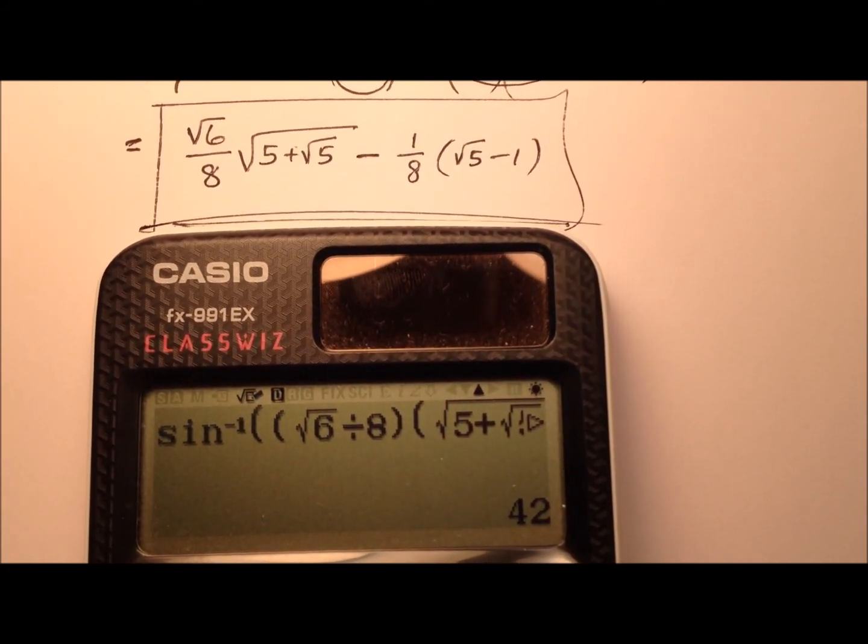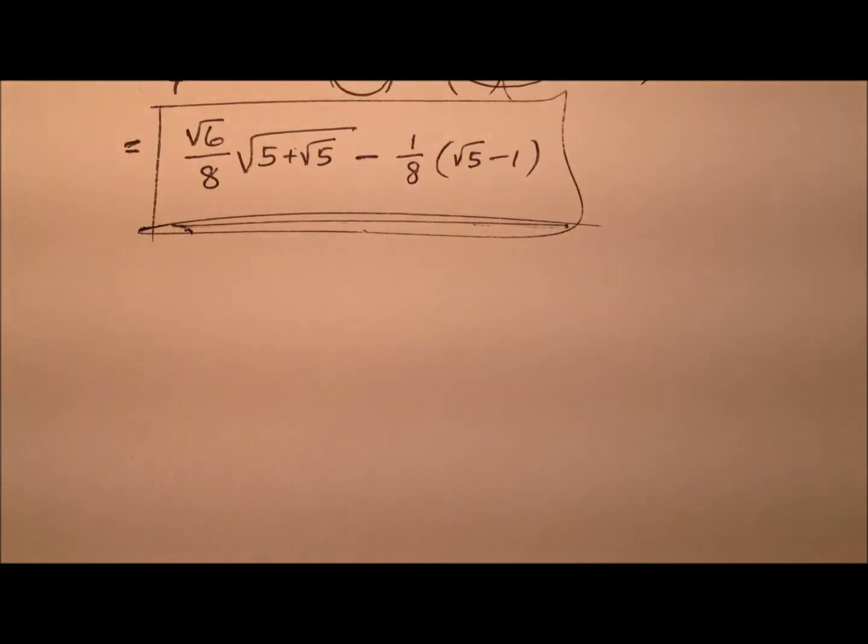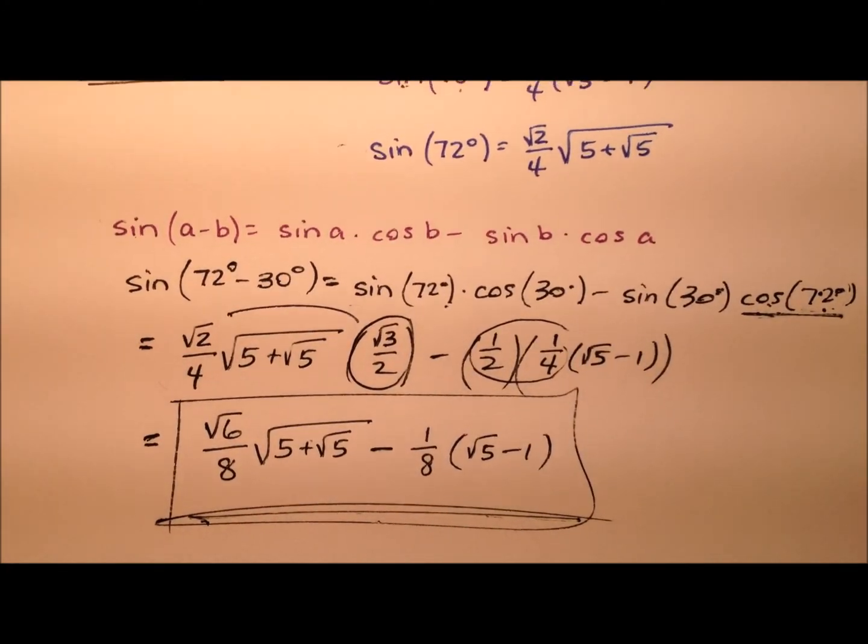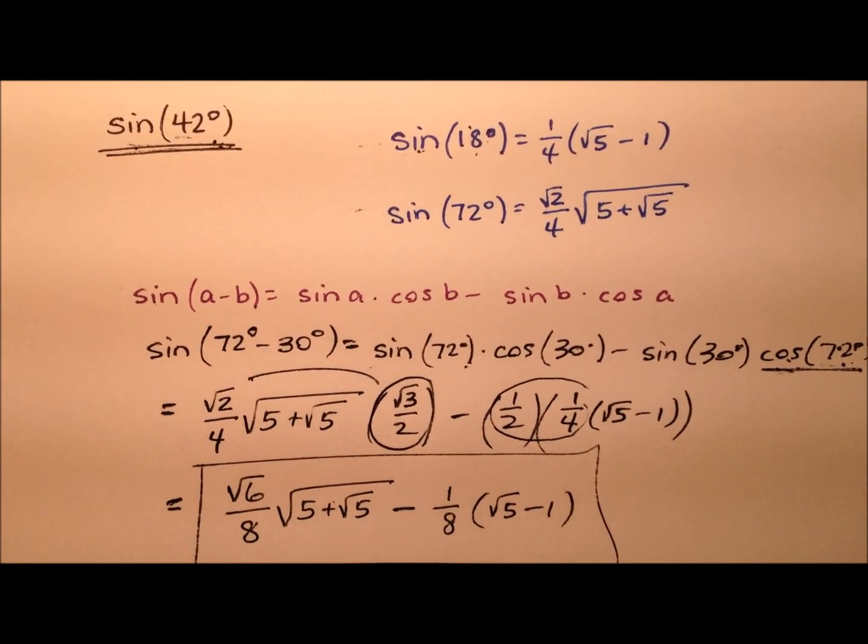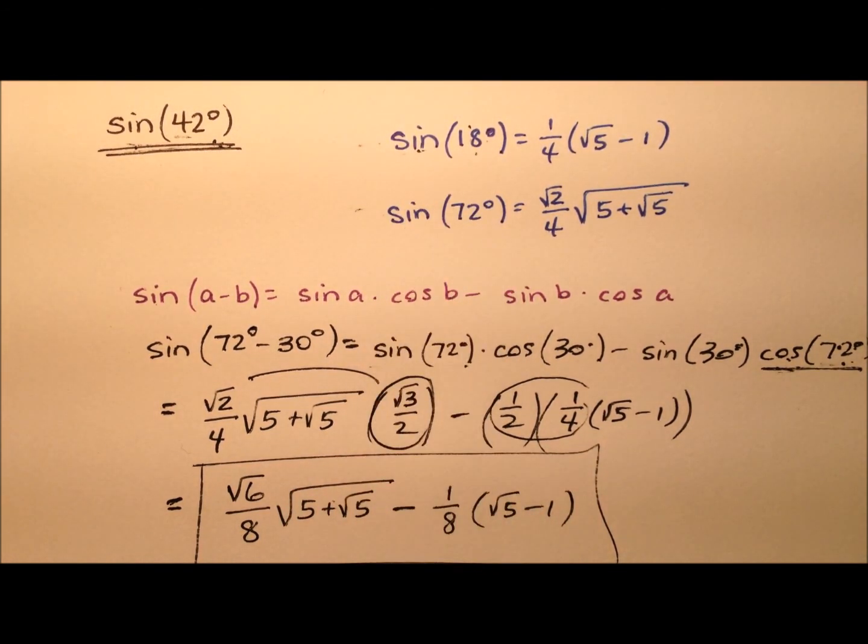So we do see that this expression that we just found is going to be the exact value for the sine of 42 degrees, and once again the way we got that is by using the difference identity for sine, and also including these two other values, the sine of 18 degrees and the sine of 72 degrees.